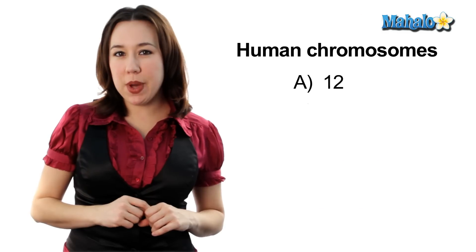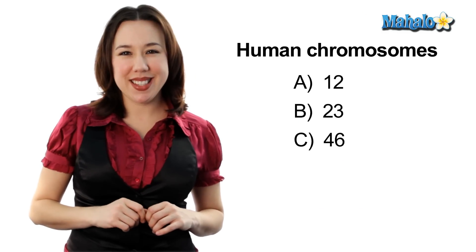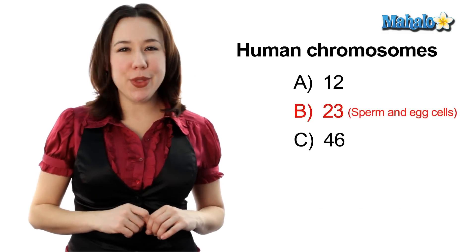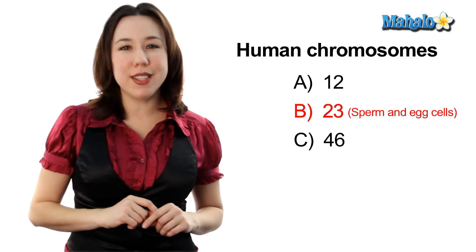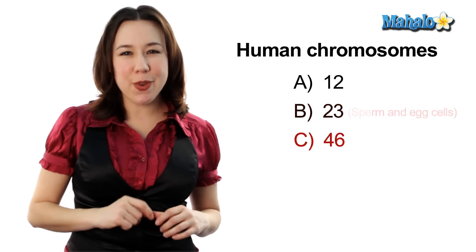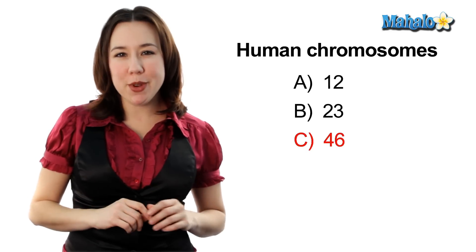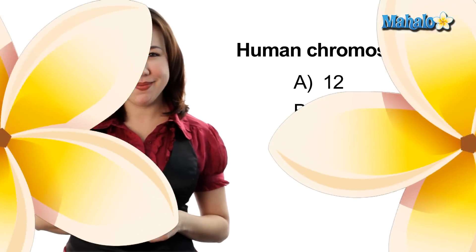Can you guess how many chromosomes humans have? 12, 23, or 46? Well, if you guessed 23, you would be right for the number of chromosomes found in sperm and egg. But if you guessed 46, you'd also be right for the total number of chromosomes found in all of the other body cells.